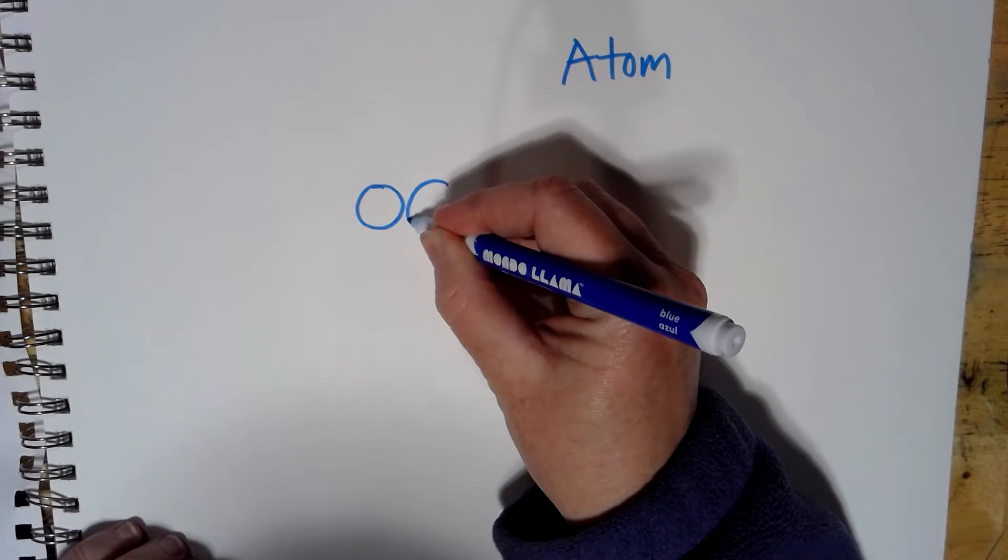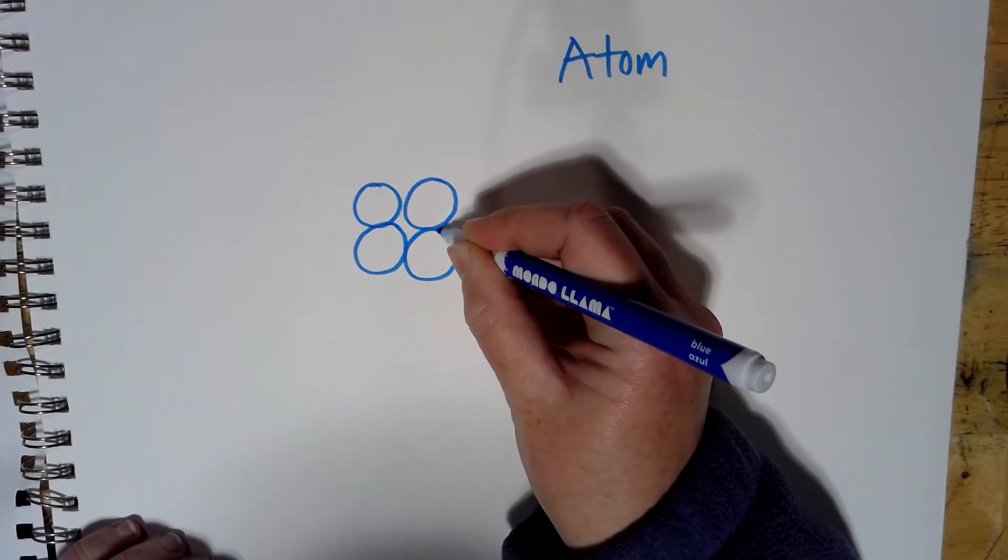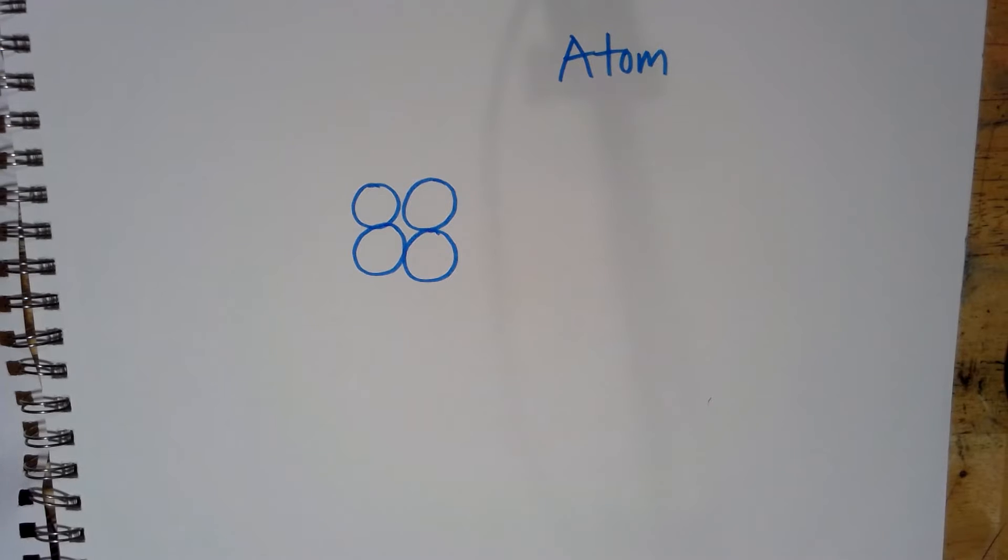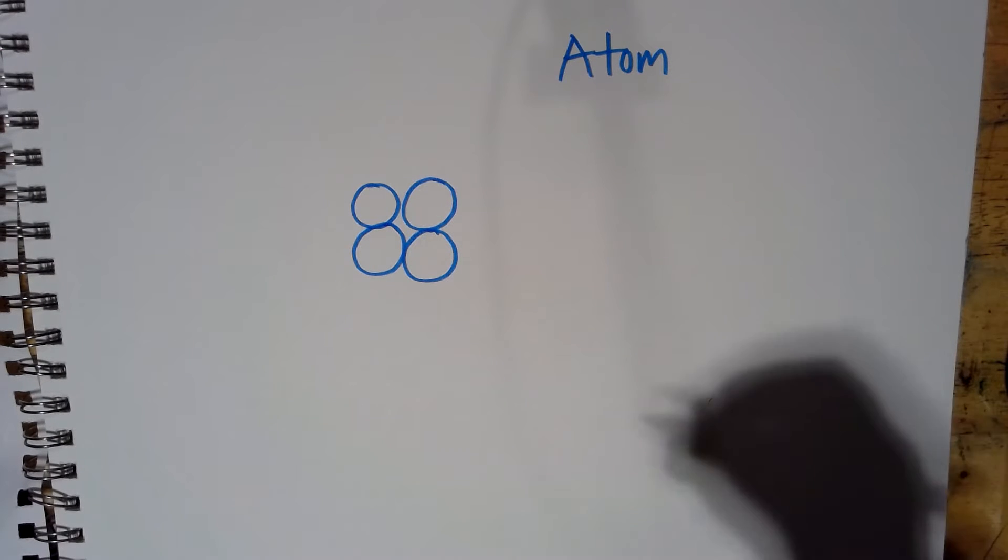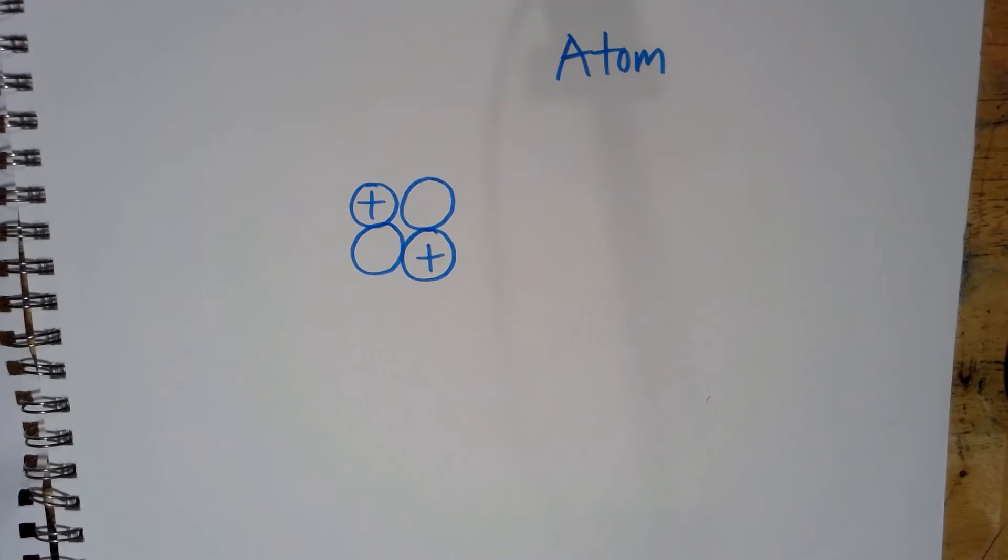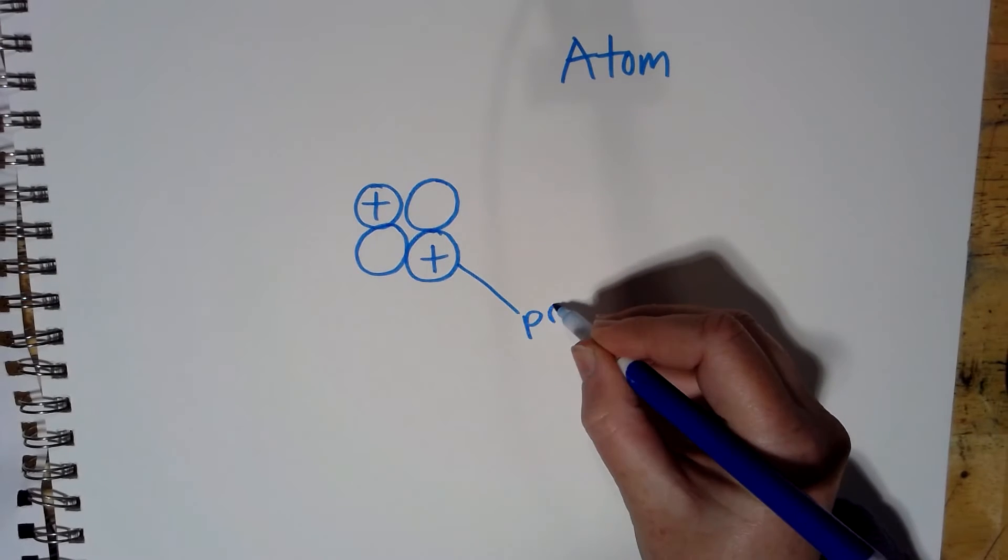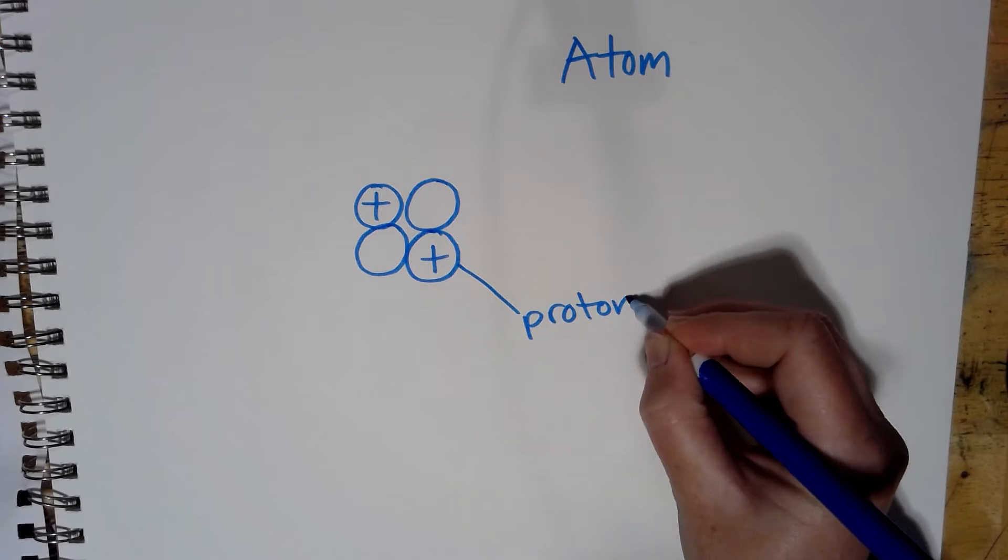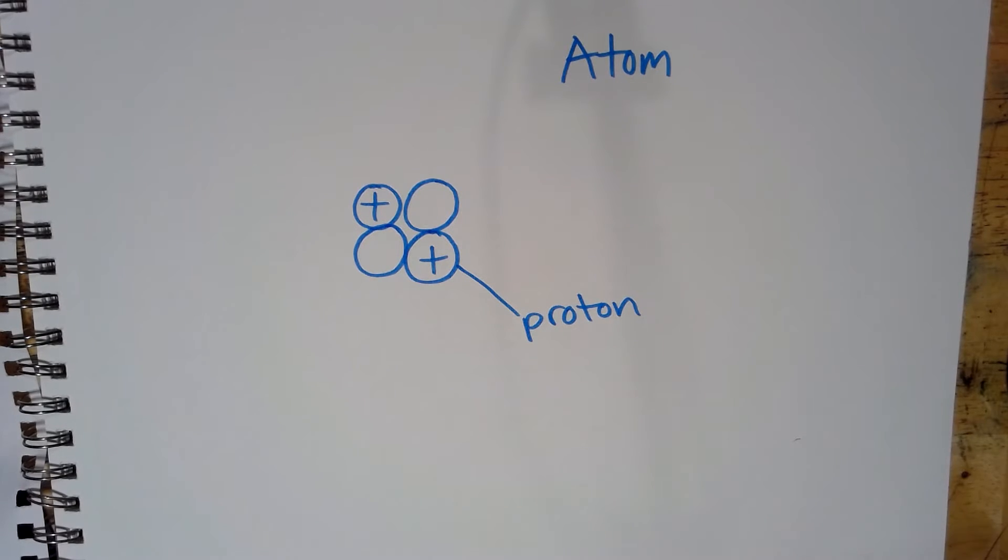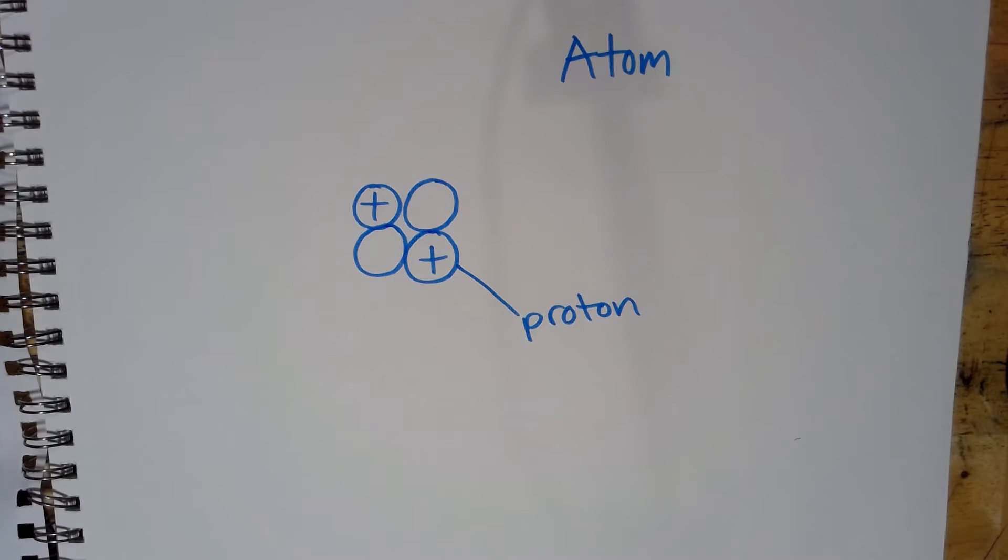So let's go ahead and start with the center of the atom called the nucleus. And there's two different types of particles here in the center of this atom. One type has a positive charge to it. We're going to put plus signs for positivity in there. And these are called protons. They're pro-everything, they're just like, love it, they're so positive.